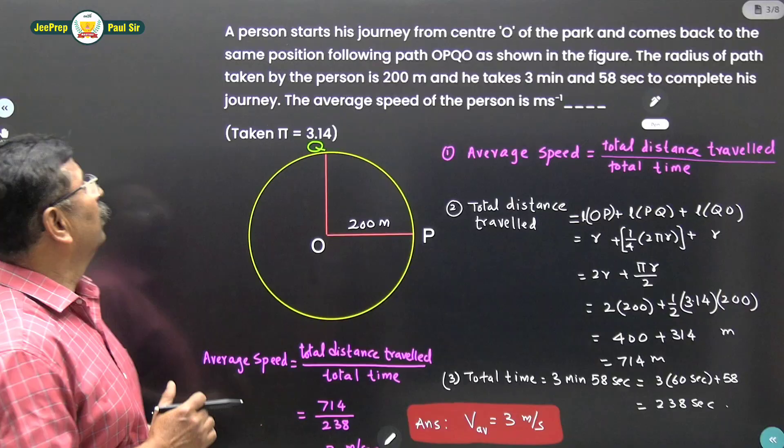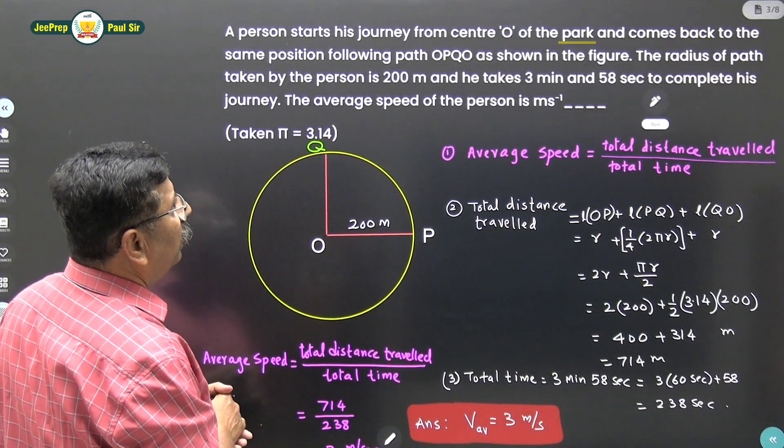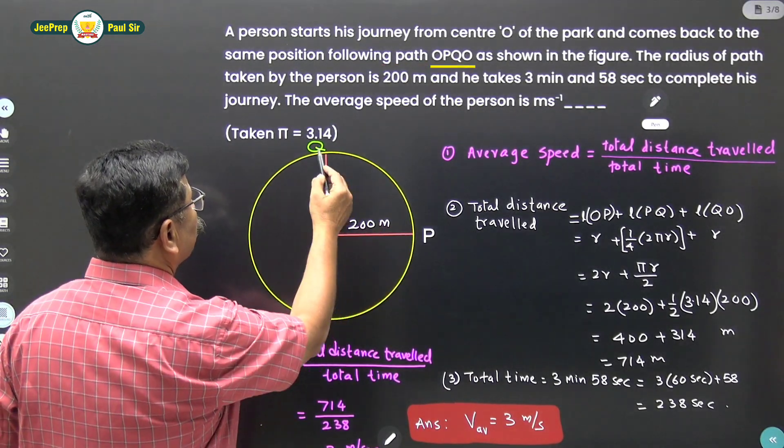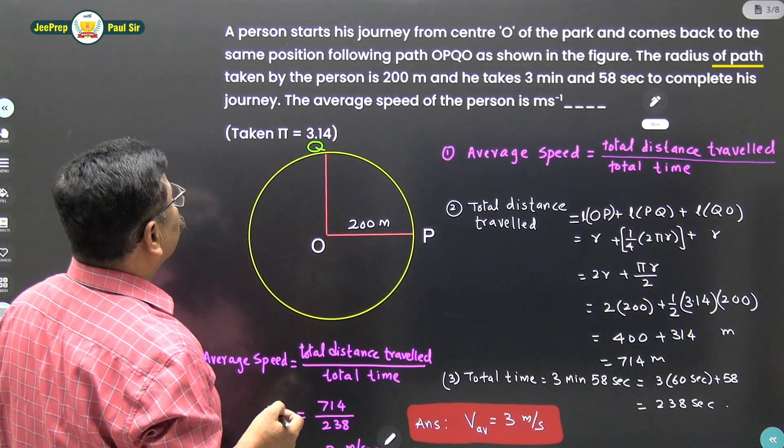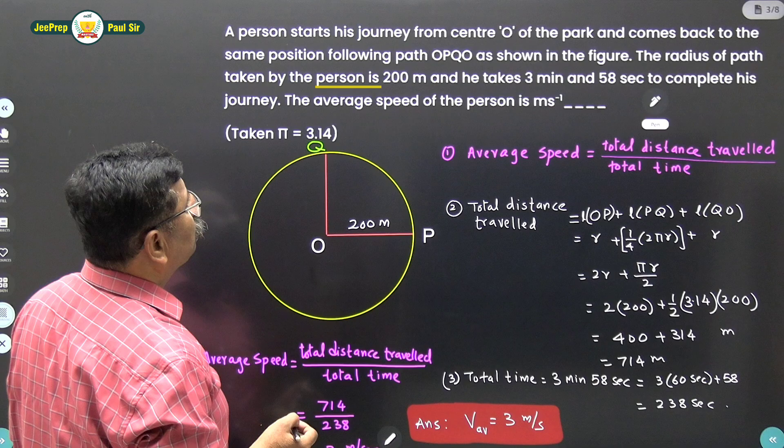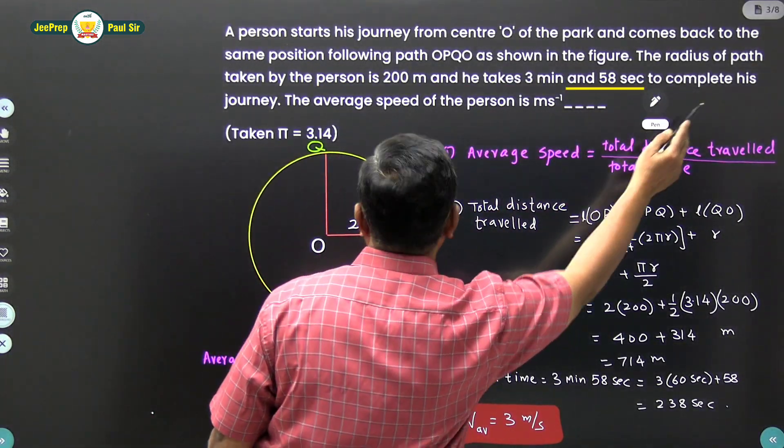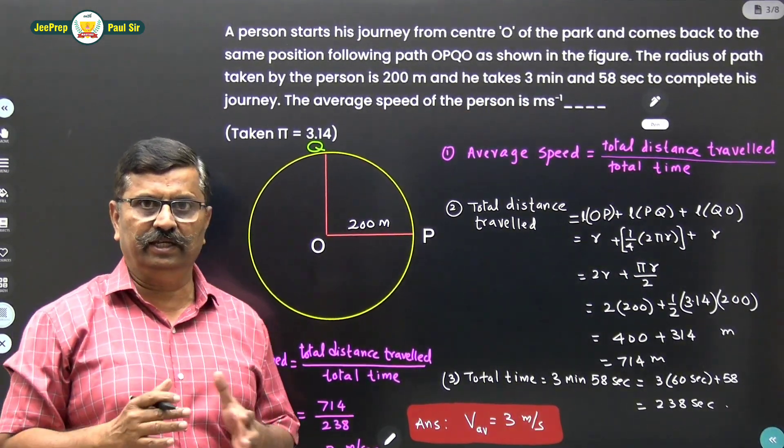Let us read the problem. A person starts his journey from center O of the port and comes back to the same position following the path OPQO as shown in the figure. The radius of the path taken by the person is 200m and he takes 3 minutes and 58 seconds to complete his journey. The average speed of the person in meter per second is...